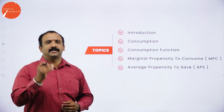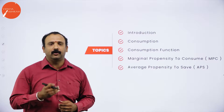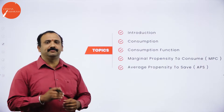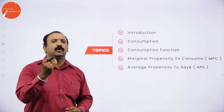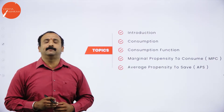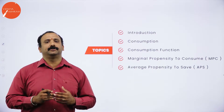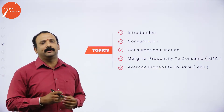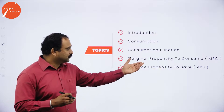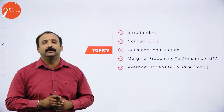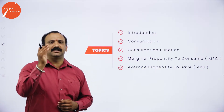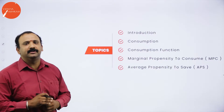We are going to start with consumption, a very important function of the economy. Without consumption, there is not much happening in macroeconomics. Next, we move to the consumption function, which we are going to understand using a little bit of equations. Then we are going to talk about marginal propensity to consume and average propensity to save — both important topics we will learn for the first time today.